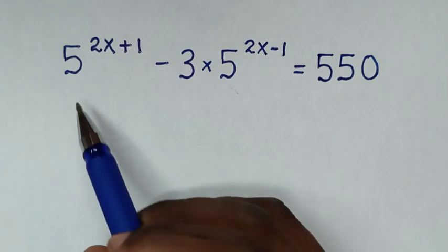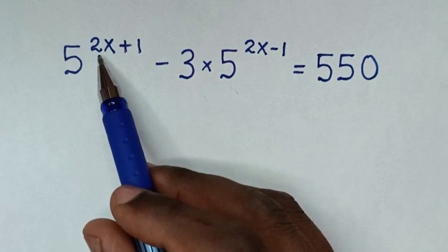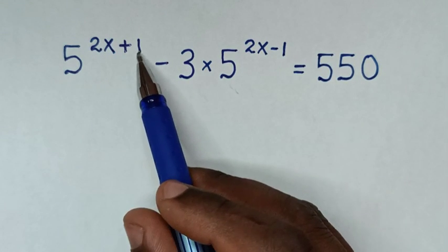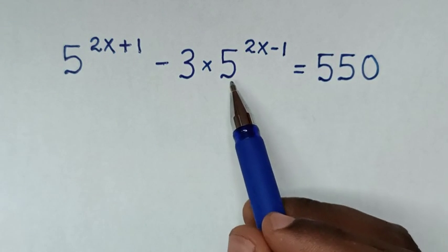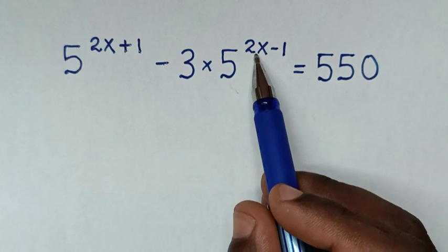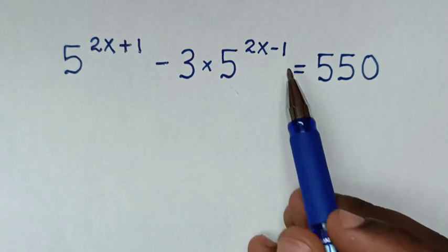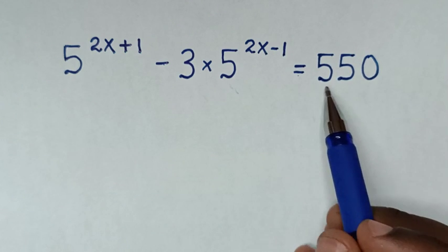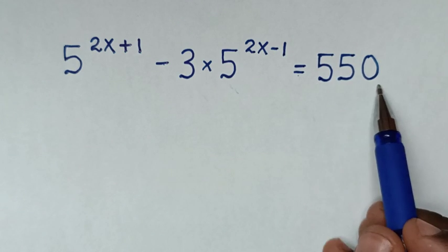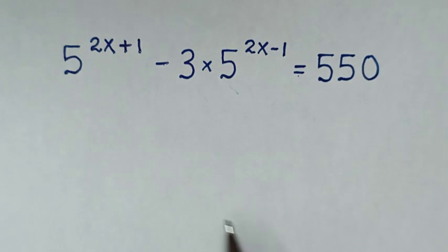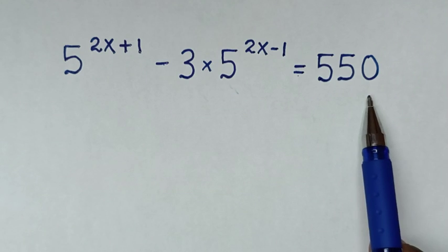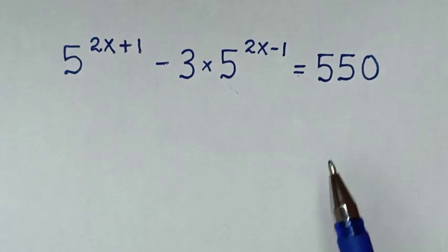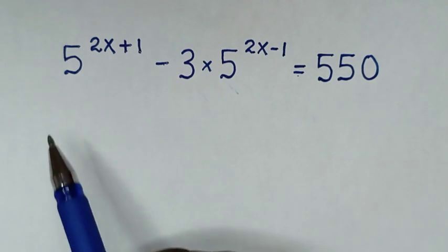Hello. How to solve 5 power 2x plus 1 minus 3 times 5 power 2x minus 1 is equal to 550 — to find the value of x from this equation.